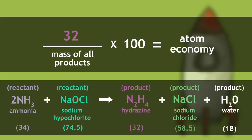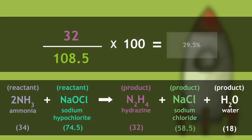The total sum of all the products, including hydrazine, is 108.5. Therefore, the mass of our useful product, 32, divided by mass of all the products, 108.5, multiplied by 100, gives us an atom economy of 29.5.